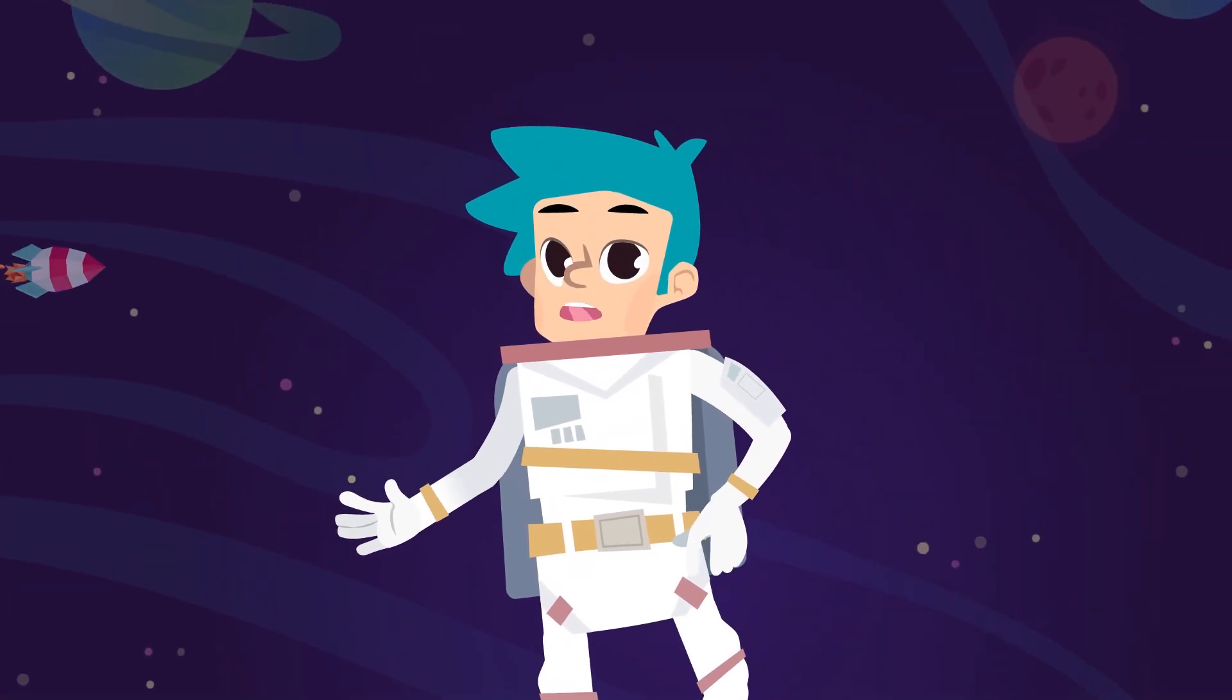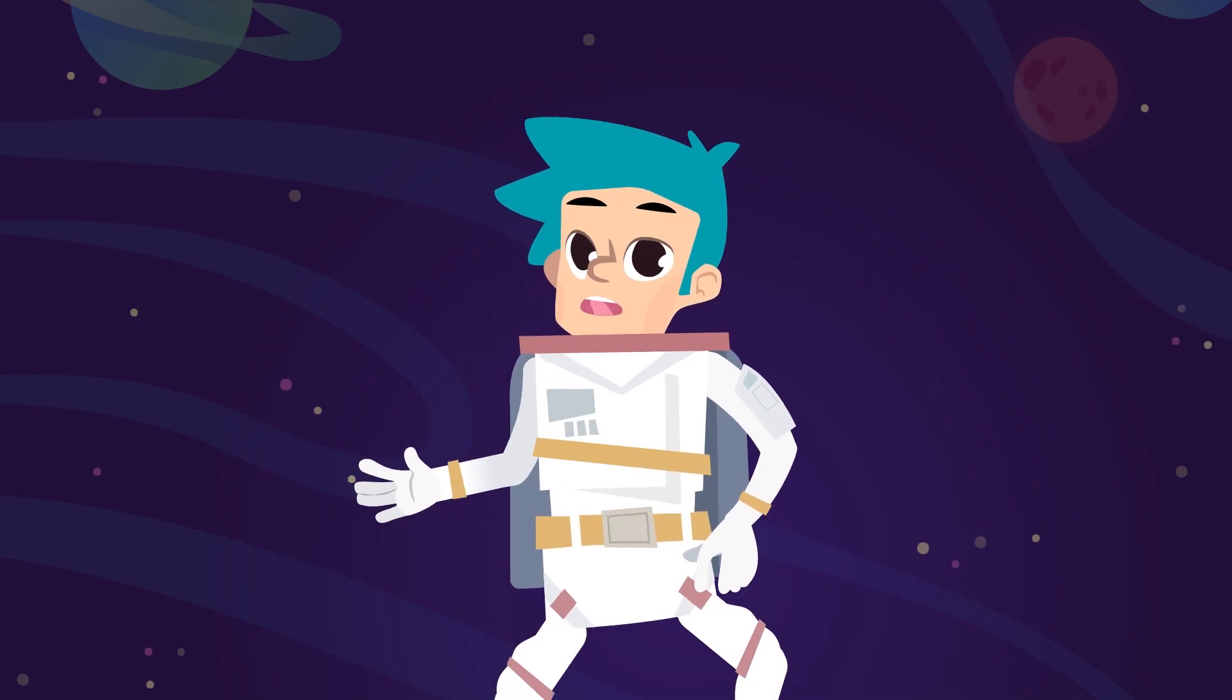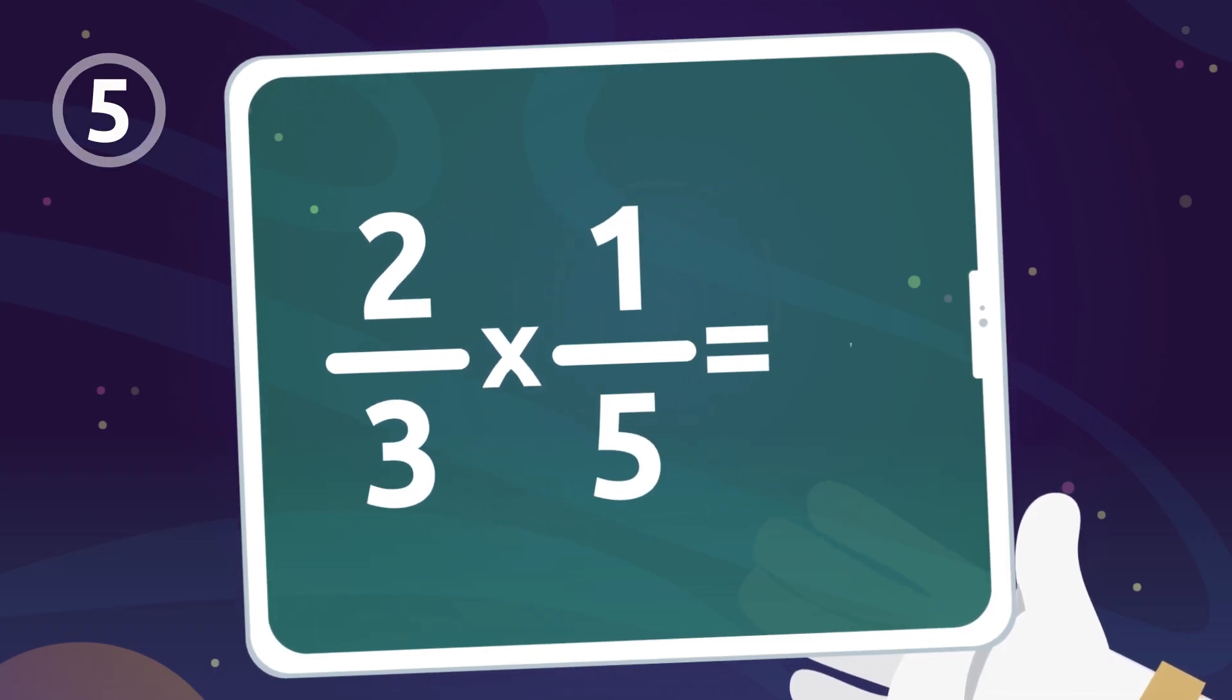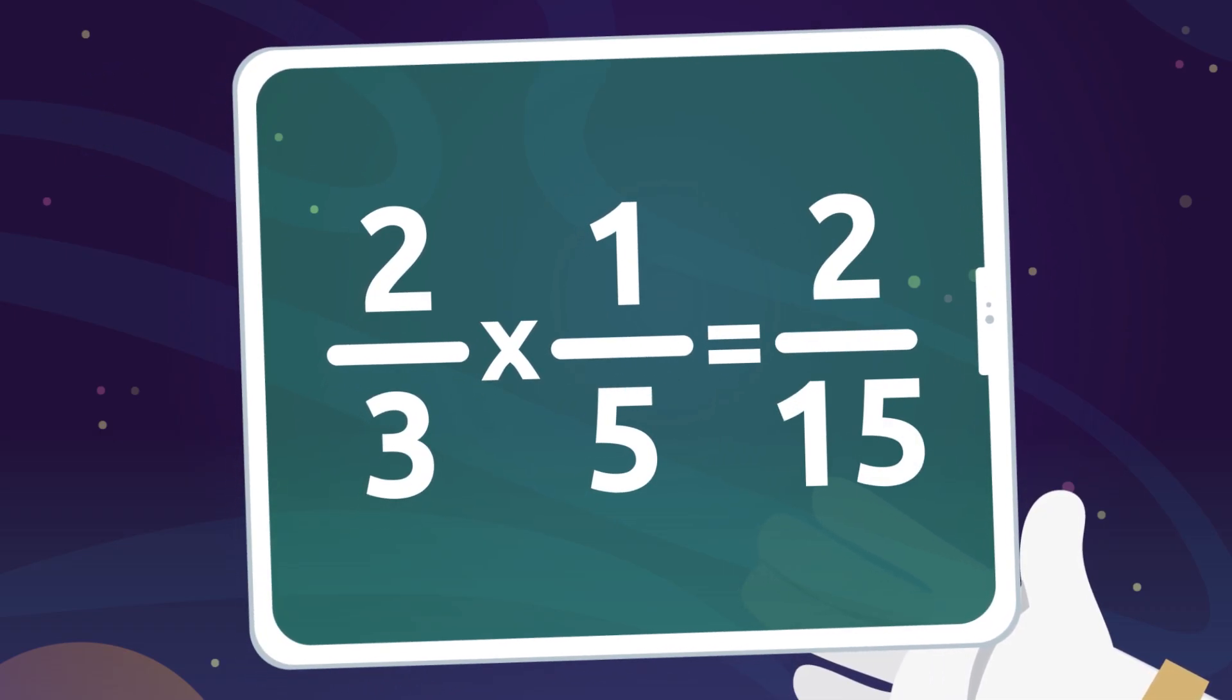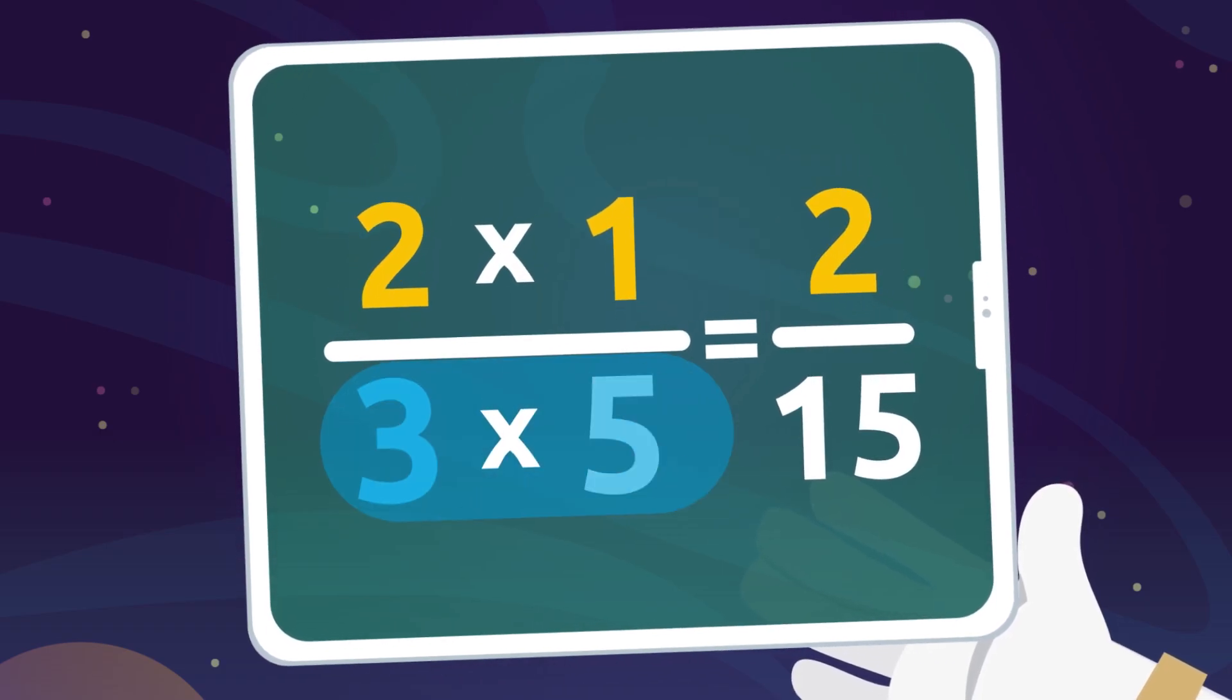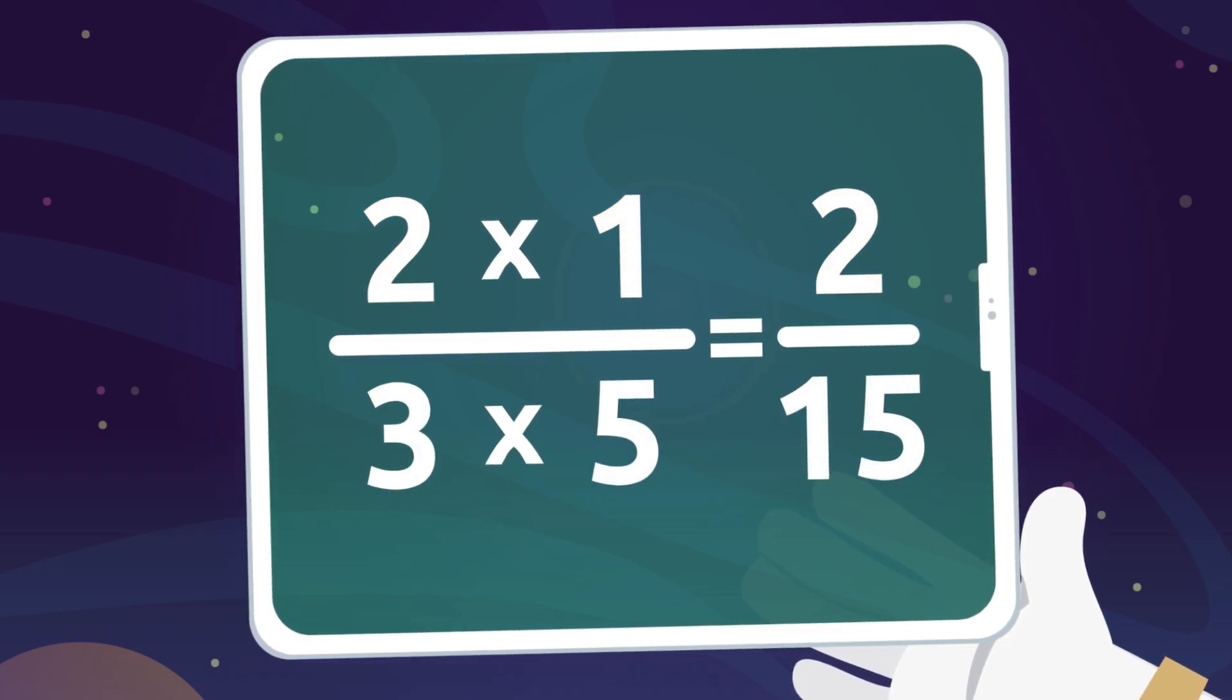Did you understand that? Shall we look at another example? Let's see if you can solve this operation: two-thirds multiplied by one-fifth equals... two-fifteenths! Two by one equals two, and three by five equals fifteen. Did you get that right? Amazing!